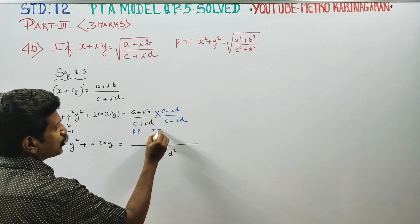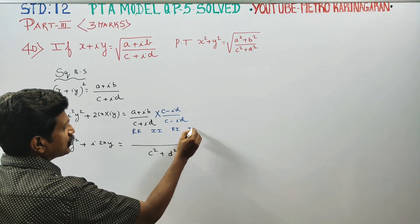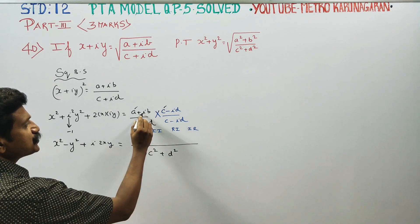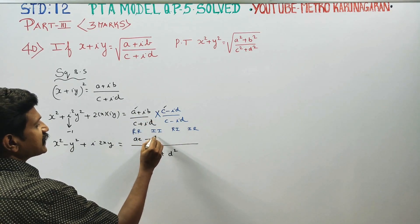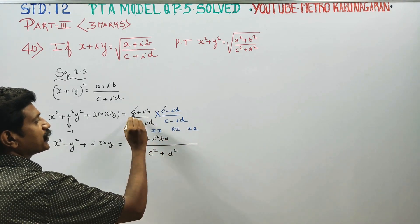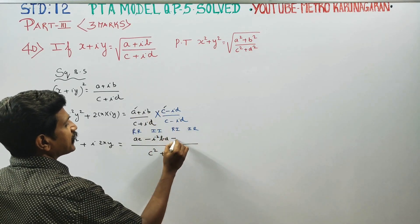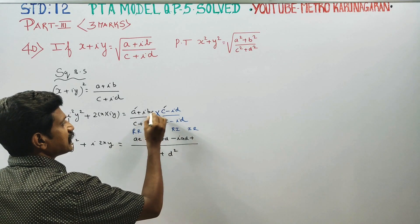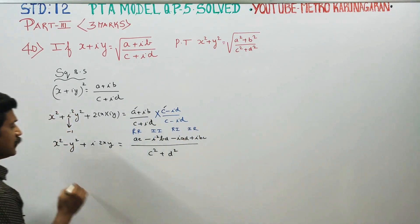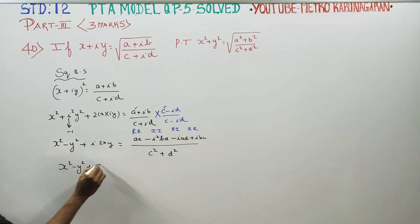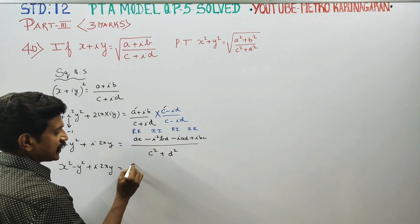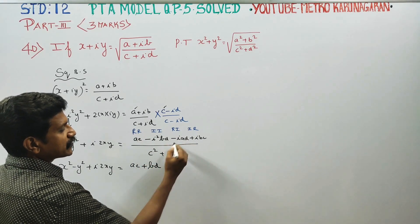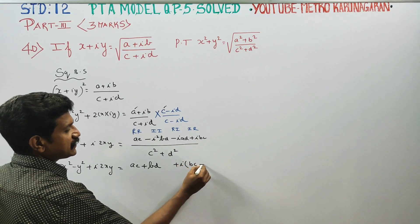Imaginary into imaginary, then real into imaginary, imaginary into real. Plus into plus is plus, plus into plus is plus, i into bc. Last stage in the beginning: x square minus y square plus i into 2xy is equal to ac. Since i square equals minus 1, minus becomes plus bd. Taking i as common: i common, plus bc minus ad.